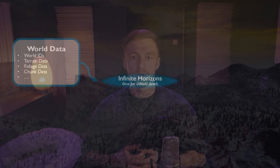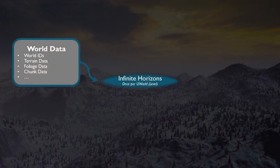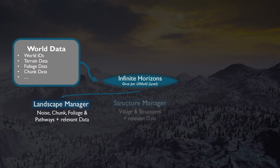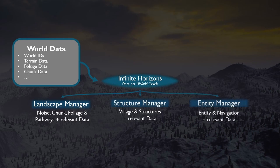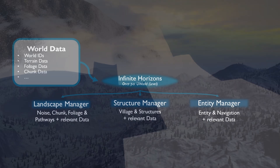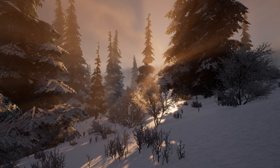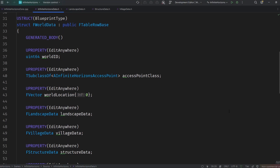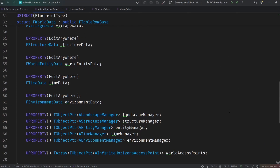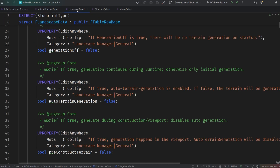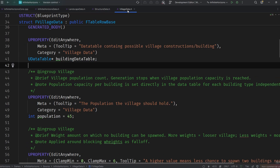The Infinite Horizons core class delegates different generation tasks to the main manager classes. Currently there are three main managers: one for generating the landscape, one for spawning structures, and another one for handling entities and navigation. Each manager handles different subclasses — for example, the landscape manager handles junk actors, noise algorithms, foliage generation, and a lot more. I've split up the world data into different data structs so each manager only holds a reference to the required data stored in the Infinite Horizons core.